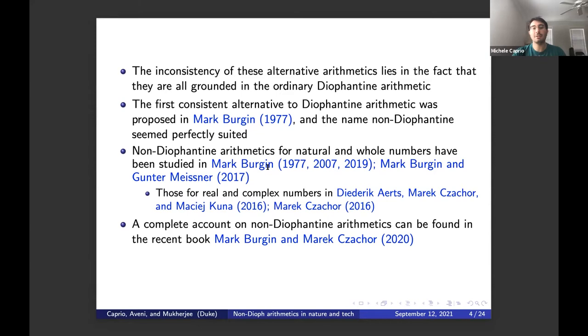The first consistent alternative to Diophantine arithmetic was proposed by Professor Bergin himself in 1977. The name non-Diophantine seemed perfectly suited in the way non-Euclidean geometries is a perfect name for geometries that do not follow Euclidean axioms. Non-Diophantine arithmetic for natural and whole numbers have been primarily studied by Professor Bergin, and those for real and complex numbers by Professor Zakor. A complete account can be found in their recent book in 2020, which I really encourage you to buy and look at.